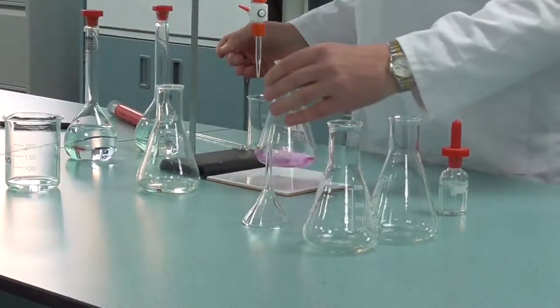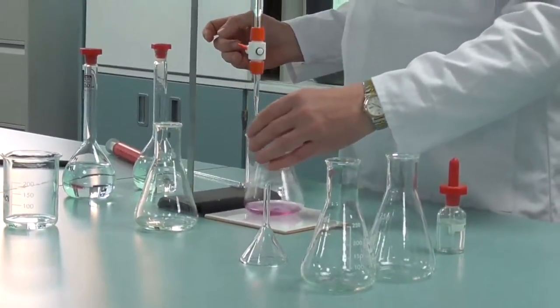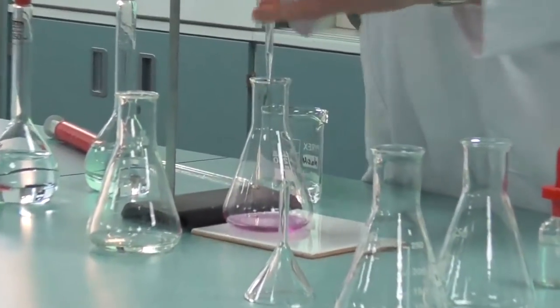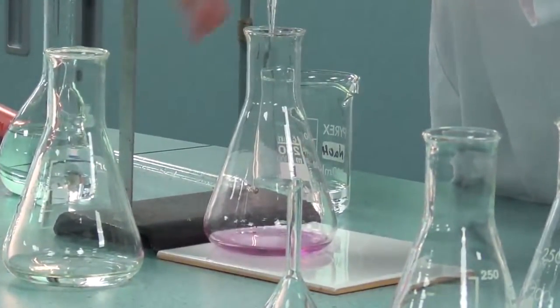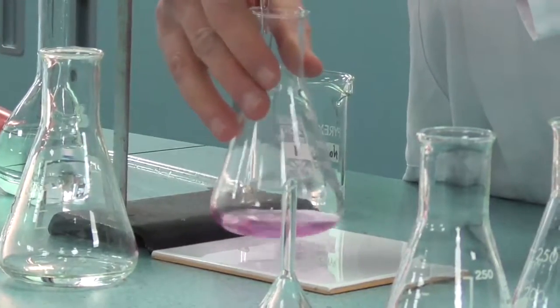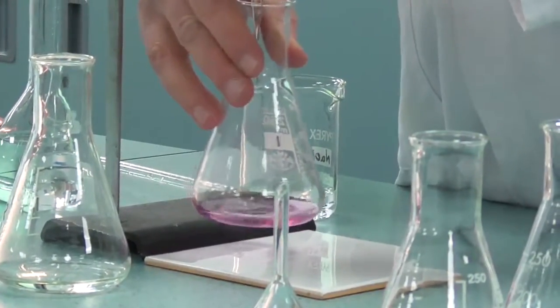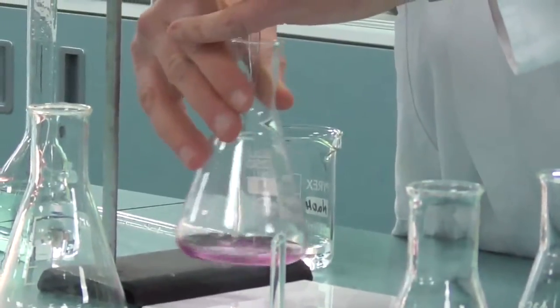And now we swirl it. So we now do our titration again, putting your hand behind and swirling with your right hand. Your left hand, just turn it round, and we now run it in.